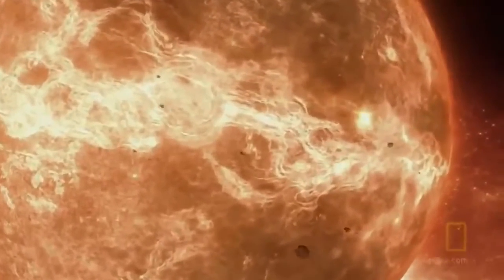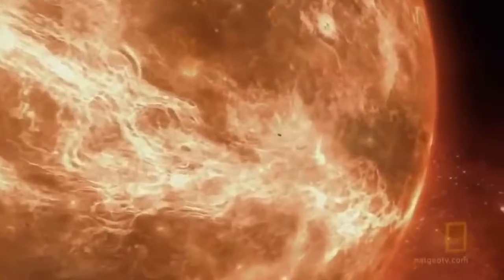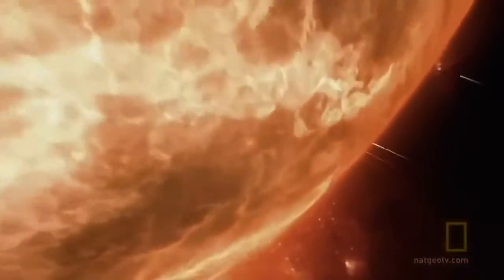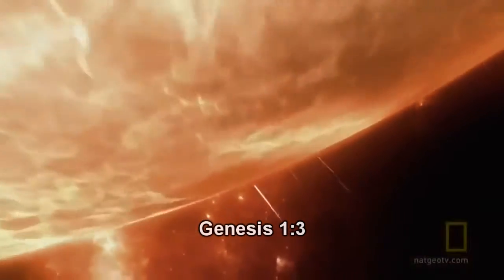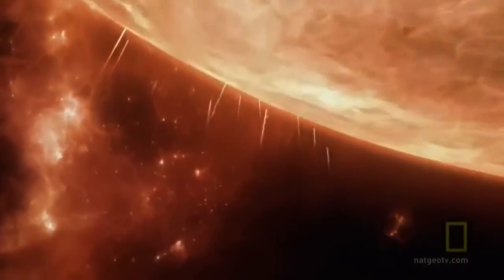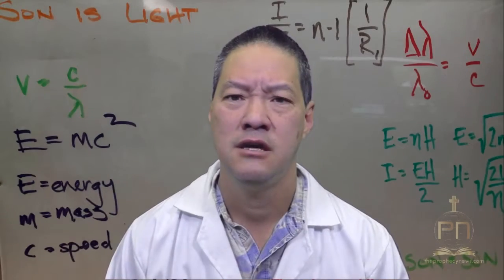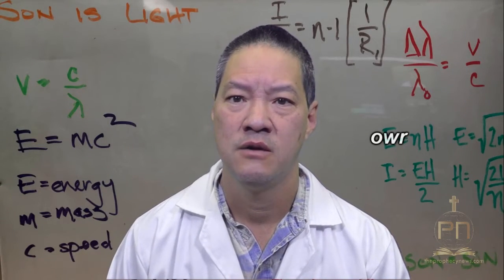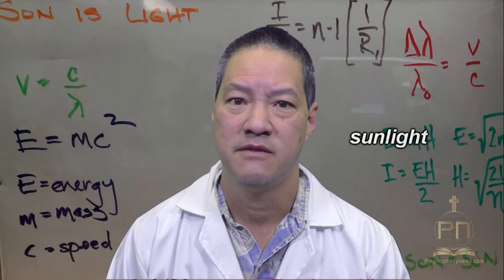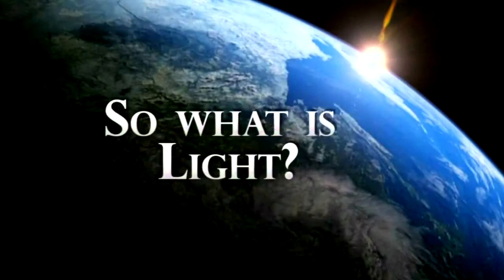Then God said, let there be light, and there was light. God saw that the light was good, and God separated the light from the darkness. Genesis 1:3. The Hebrew word for light is ohr, which means sunlight, for the sun was the light from the very beginning.